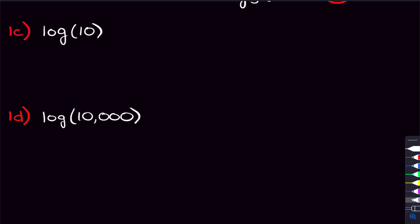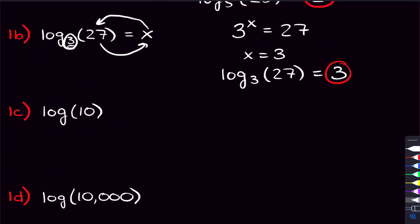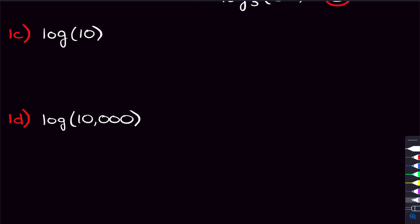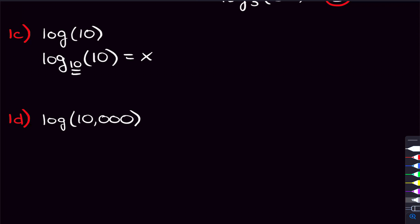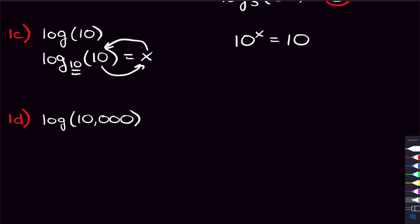Now let's look at log of 10 — you'll notice this log doesn't have a base. When a log doesn't have a base, the base is 10. So we make the 10 bigger, x becomes the power, and this 10 goes to the other side. We're asking: 10 to what power equals 10? That's 10 to the first power, so log of 10 equals 1.